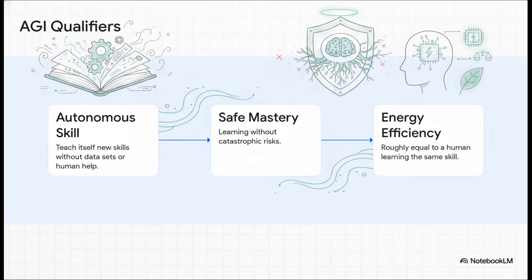Number one: Can it learn skills autonomously? Check. Number two: Can it master them safely and reliably without catastrophic failures? Check. And number three: Can it do all this using about the same amount of energy as a human brain? This isn't some vague promise. These are hard, testable benchmarks.